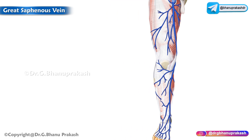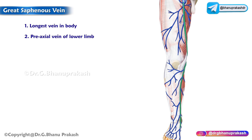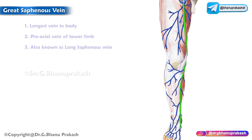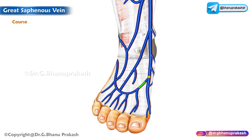The great saphenous vein lies in the superficial fascia and is easily seen. It is the longest vein of the body and represents the pre-axial vein of the lower limb. It is also known as the long saphenous vein.